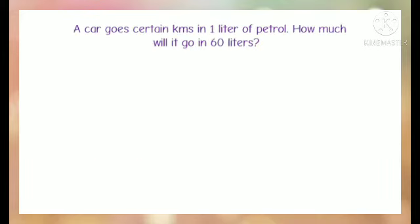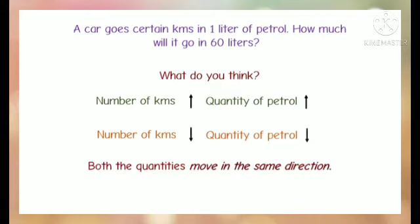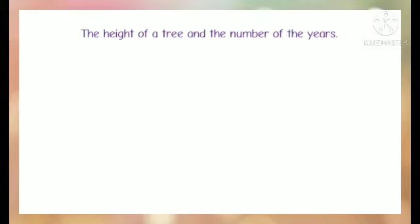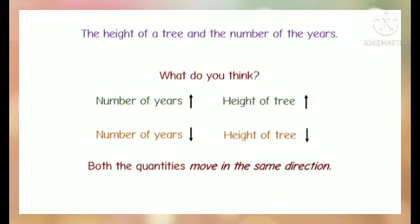A car goes a certain number of kilometres on 1 litre of petrol — when kilometres increase, petrol increases, and vice versa. Similarly, for the height of a tree and the number of years: when the number of years increases, the height of the tree increases, and when the number of years decreases, the height decreases. Both quantities move in the same direction in each case.